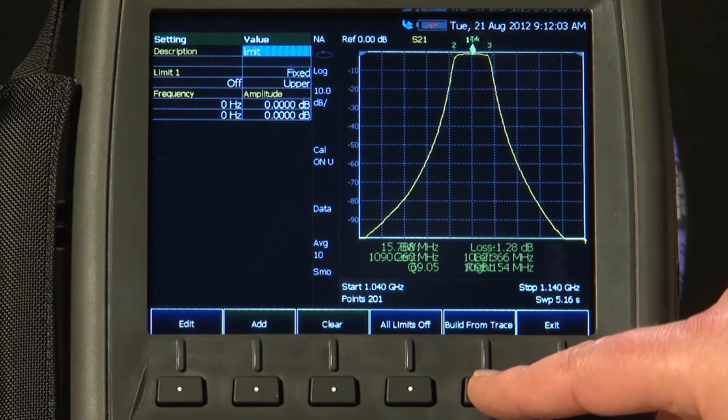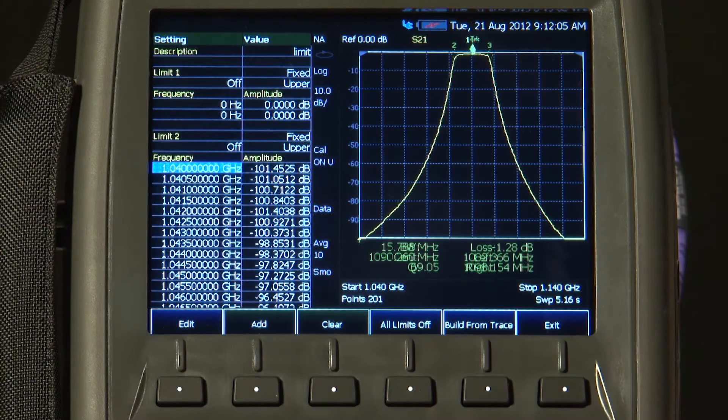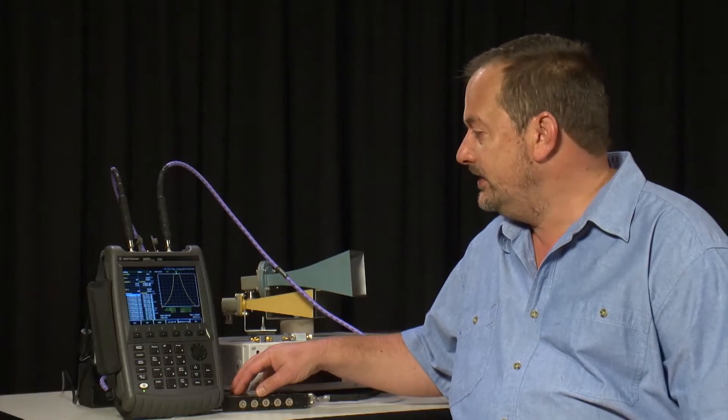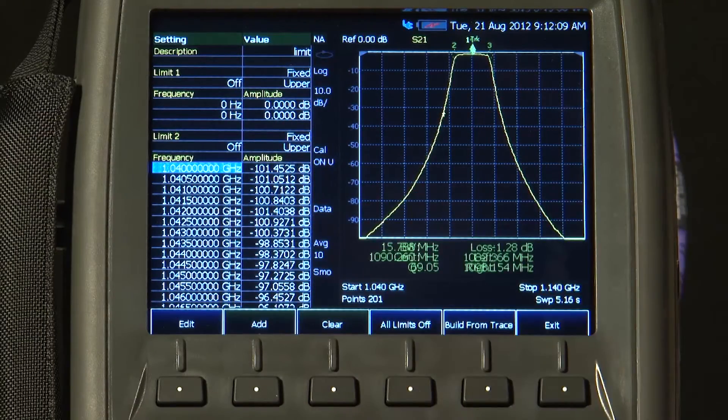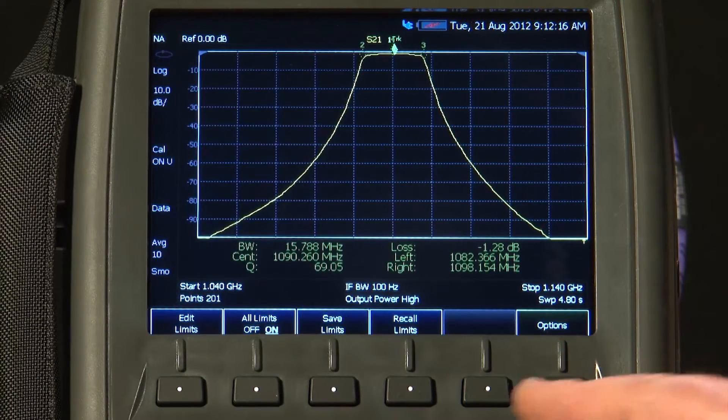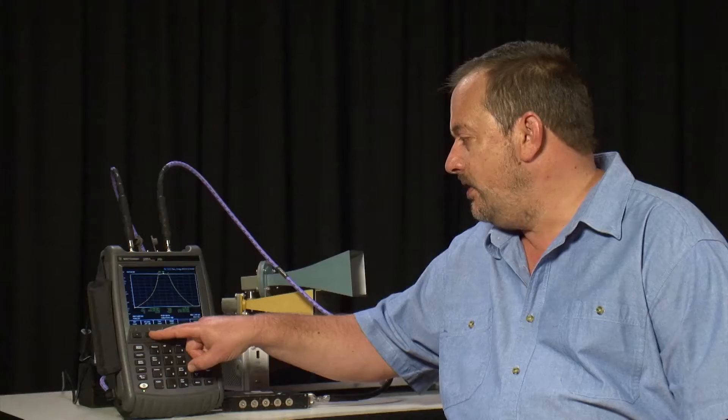But if we have a perfectly tuned device, as we do with this filter here, I can ask the FieldFox to build the limit lines automatically from this trace. It will treat this filter as the golden standard. Here you can see it has created the table of limit lines. I will exit from there. We will turn the limits on.